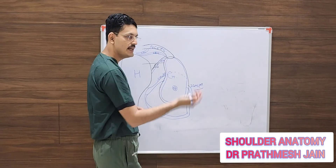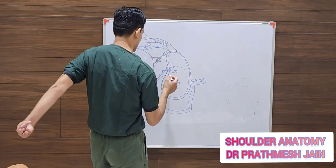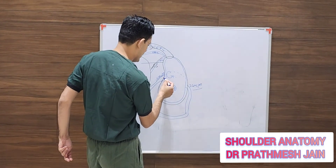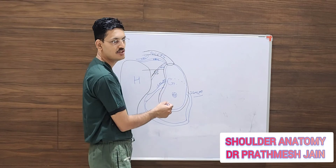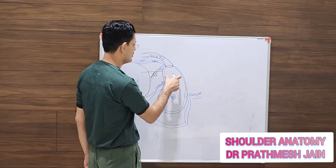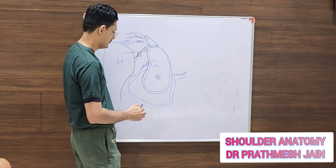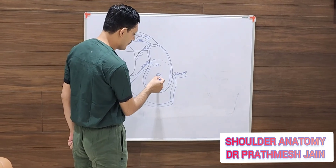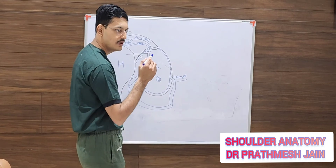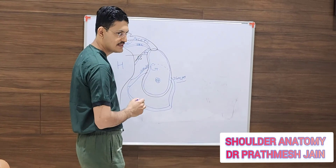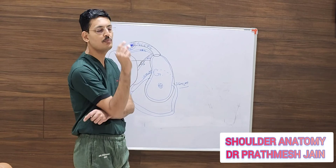In cases of chronic dislocations or subluxation, you will have wear in this part and may see an inverted pear-shape appearance, in which the superior part is broader than the inferior part. This bare area of the glenoid is usually readily identifiable on arthroscopic examination.